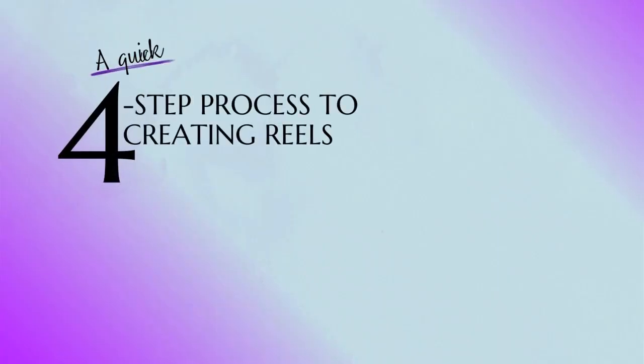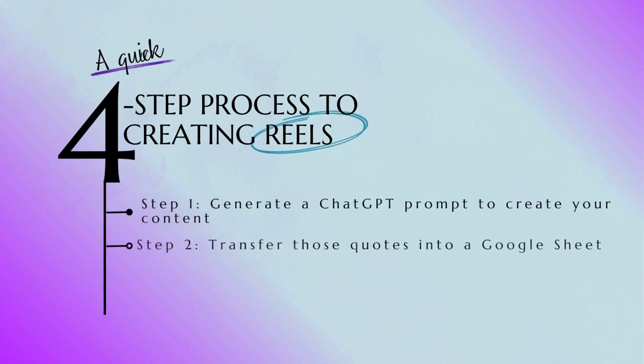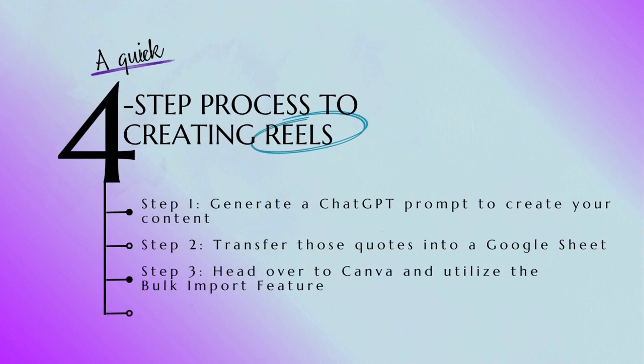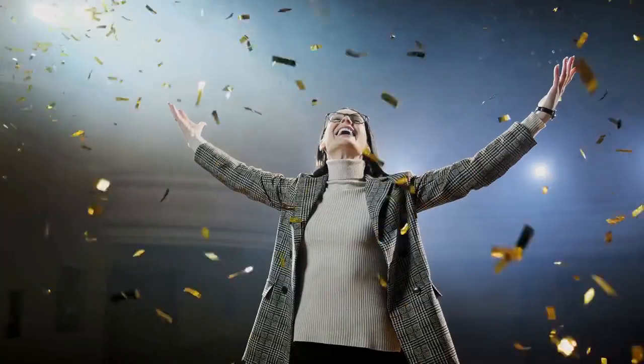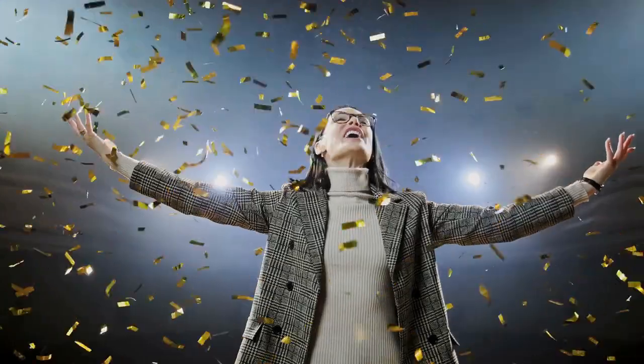Let's sum up. We did a lot today. You go into ChatGPT and give it the prompt that gets you 50 quotes. Then go into Excel or Google Sheets and populate the sheet with your quotes. Then go into Canva and use the Bulk Create feature. Then go into Painless Posting and use the auto import feature. Those four steps get you 50 posts. Do it one a day for 50 days, every weekday for 10 weeks — pick your poison, make it work for you. You can create 50 posts in less than five minutes, though most of your time is selecting a Canva template.